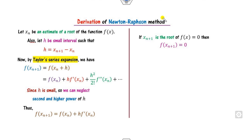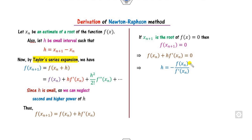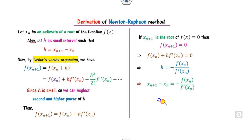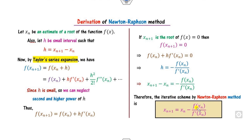Now, since we assume xₙ₊₁ is a root of the equation, f(xₙ₊₁) = 0. Substituting this value and finding h from the equation, then substituting h back, we obtain the value of xₙ₊₁. This is the sequence we generate using the Newton-Raphson method.